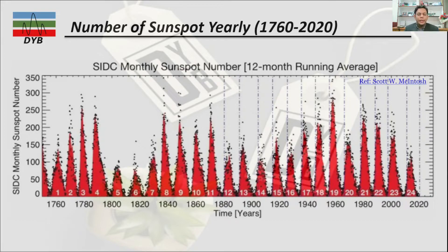As mentioned in my previous lecture, the sunspot activity and the sun's magnetic field flips roughly every 11 years. So we can say it is proven that every 10 to 11 years we have higher sunspot activity, and then it falls down.